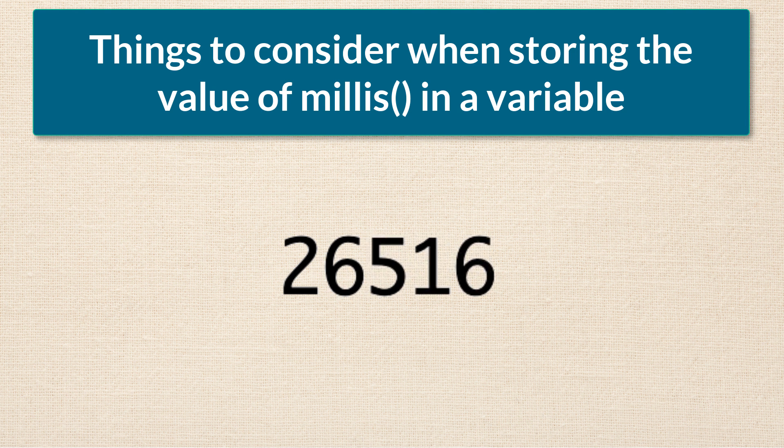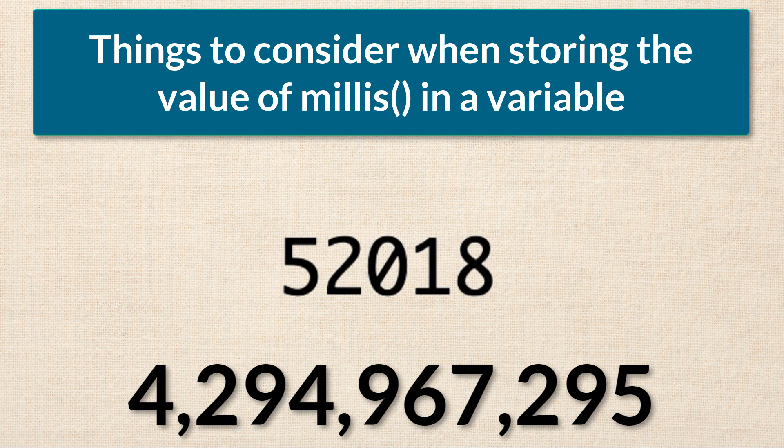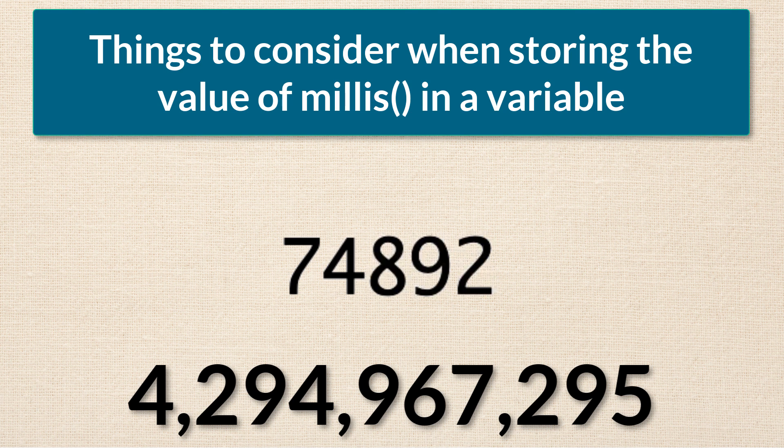You may have noticed that the value that the millis function returns can get really big, really quick. The biggest value that it can return is over four billion and some change. So practically what that means for us is that if we're going to store that number in a variable, we need to make sure that we use a data type for that variable that has space for it.